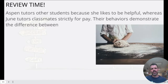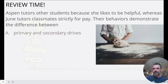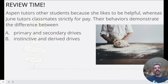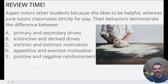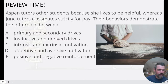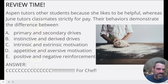Next question: Aspen tutors other students because she likes to be helpful, whereas June tutors her classmates strictly for the pay. Their behaviors demonstrate the difference between: primary and secondary drives, instinctive and derived drives, intrinsic and extrinsic motivation, appetite and aversive motivation, or positive and negative reinforcement. The answer is C — intrinsic and extrinsic motivation.